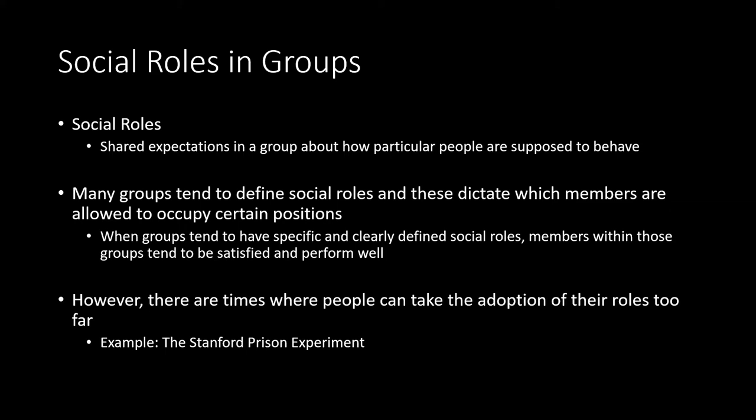There are also social roles in groups — shared expectations of how particular people are supposed to behave. On a college campus, clubs have clear roles: president, vice president, treasurer, marketing person, and so on. Even in personal friend groups, different personality types come together, and friction can arise when there are too many of one personality type relative to others.